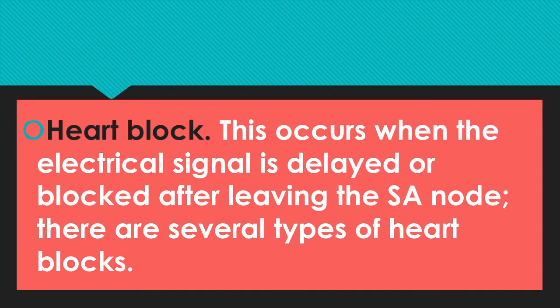Heart block: this is the interruption of impulses from the SA node. It occurs when the electrical signal is delayed or blocked after leaving the SA node.